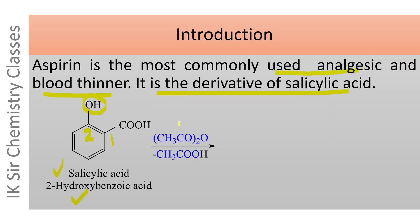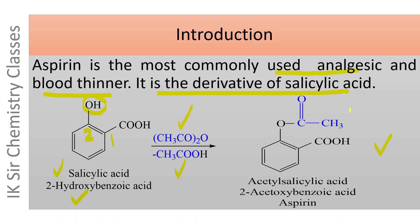If salicylic acid is treated with acetic anhydride, one molecule of acetic acid is eliminated with the formation of a compound which contains an acetyl group attached to the oxygen atom of salicylic acid. Hence its common name is acetylsalicylic acid. This group is called the acetoxy group, present at position number 2 of benzoic acid, hence its name is also 2-acetoxybenzoic acid, and its commercial name is aspirin.